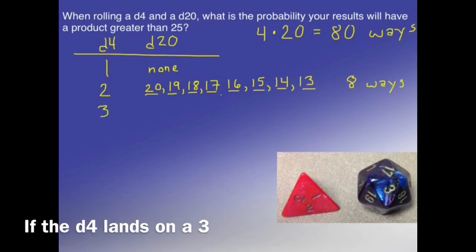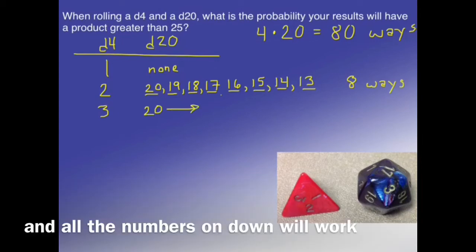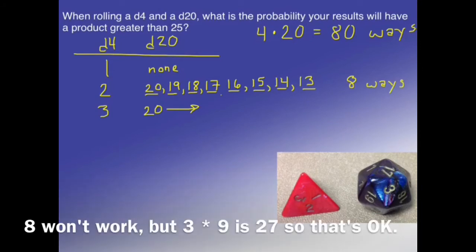If the d4 lands on a 3, 20 will work, since 3 times 20 is 60. And all the numbers on down will work until, let's see, 3 times 8 is 24, so 8 won't work. But 3 times 9 is 27, so that's okay.